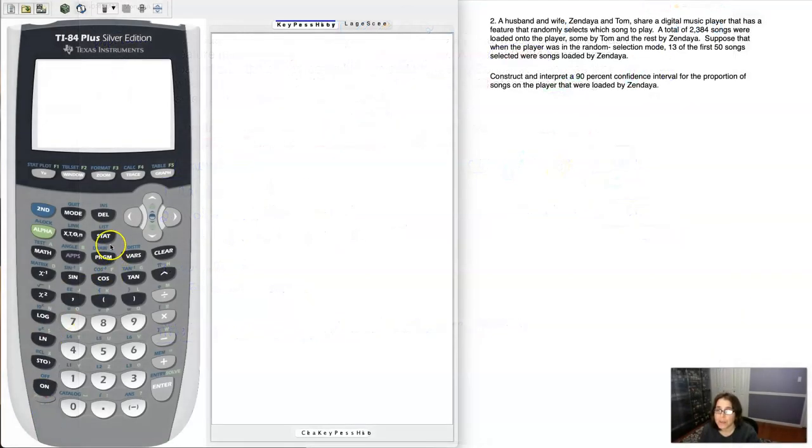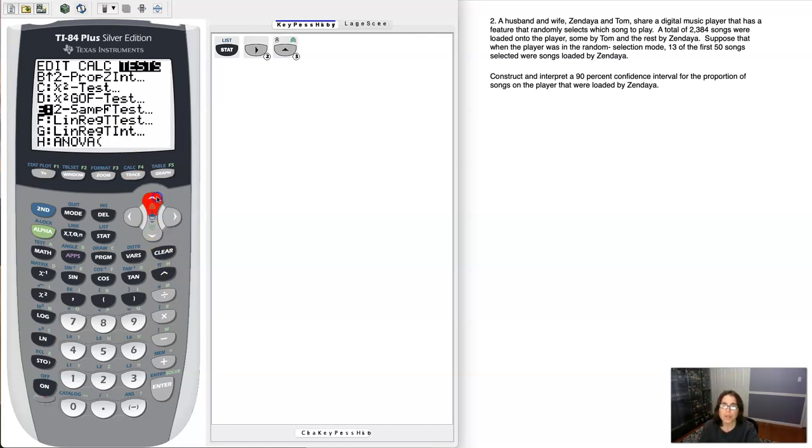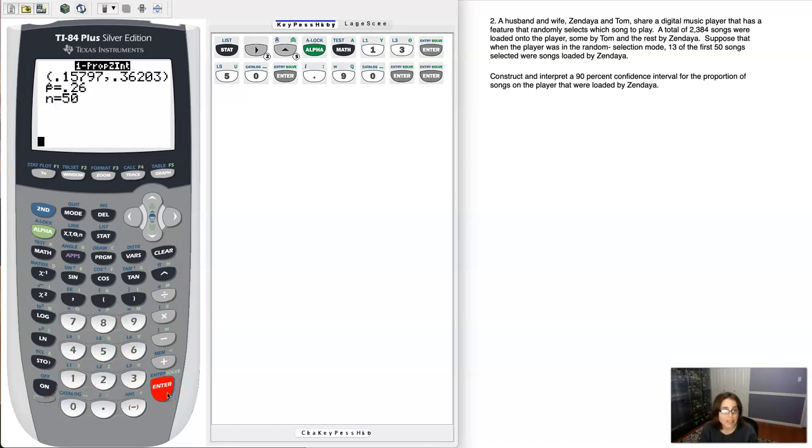I'm going to write these numbers down. So I'm going to have 0.26 plus or minus 1.645 times the square root of 0.26, 1 minus 0.26, and then we're going to divide that by 50. And you could crunch this, I mean this thing, if you wanted to on your calculator. If you're going to go that route, I would recommend that you find the margin of error first, crunch that number on your calculator and then add and subtract it from 0.26. But me personally, I'm going to flip over to my calculator in just a moment and I'm going to get these numbers straight from my calculator screen.